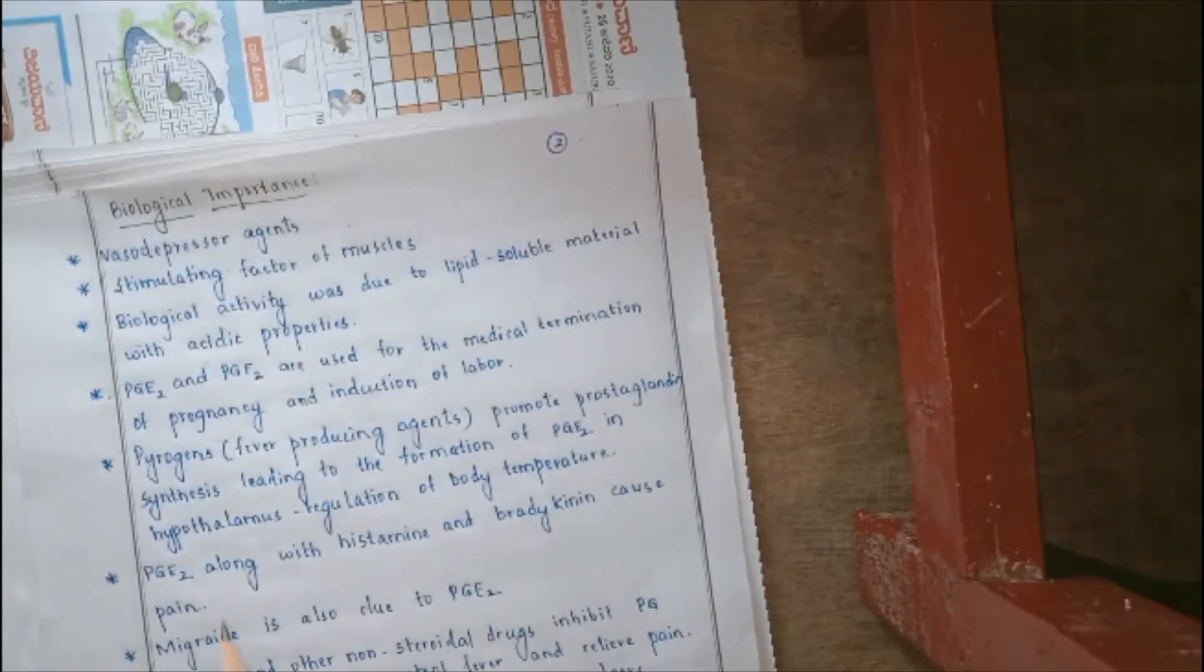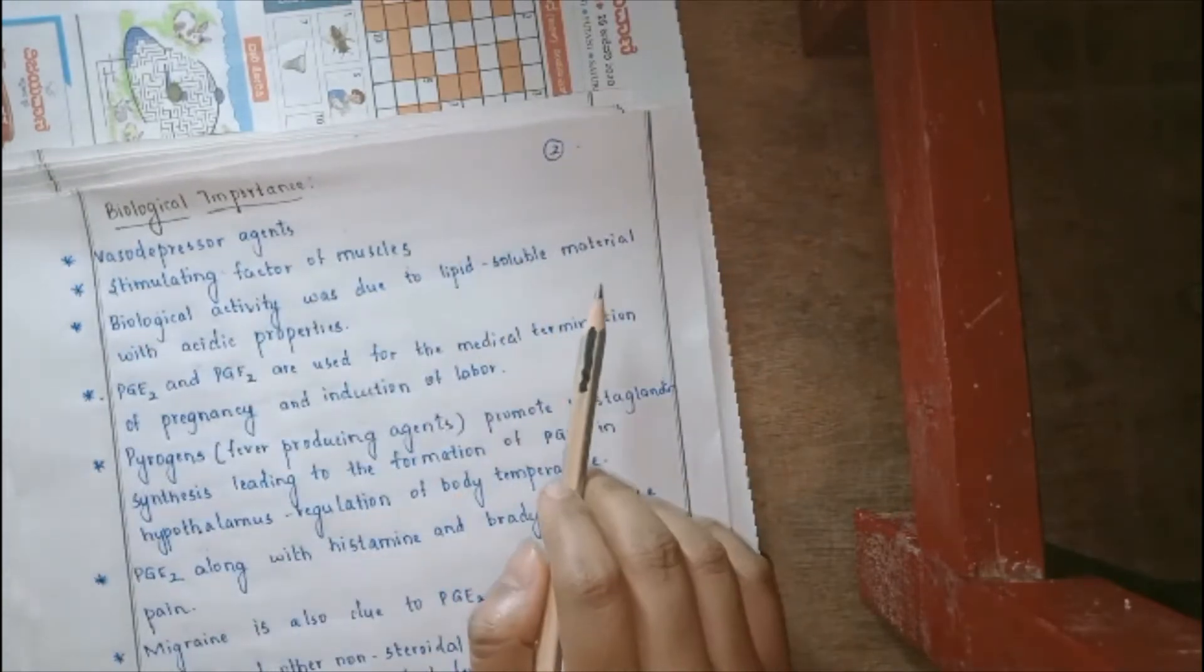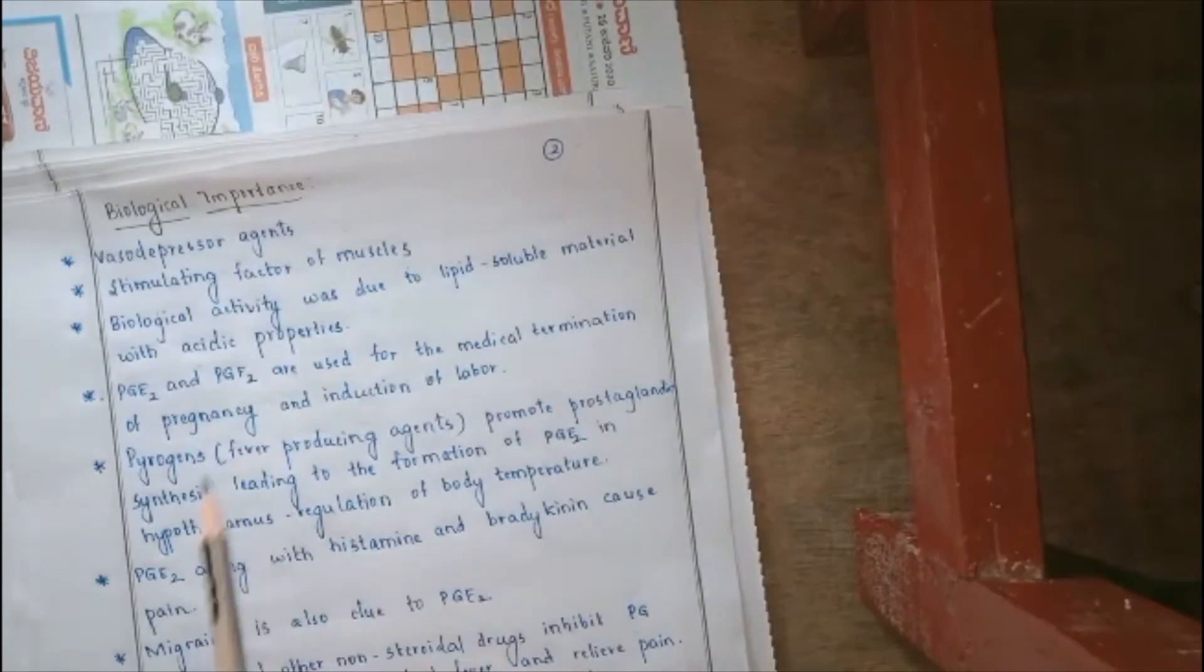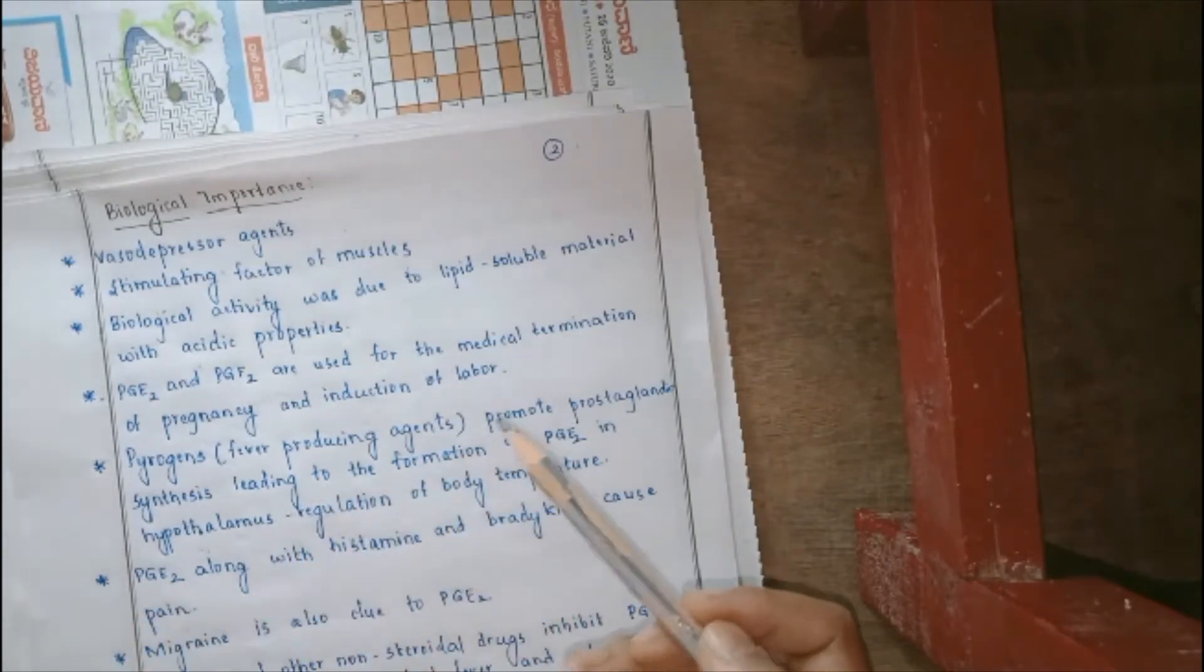Biological activity is actually associated with lipid-soluble material which is having some acidic properties. So, fatty acids, because these are presence of fatty acids given to us, we can say that they are also lipid-soluble and the properties of this particular system is because of the presence of that particular carboxylic group.